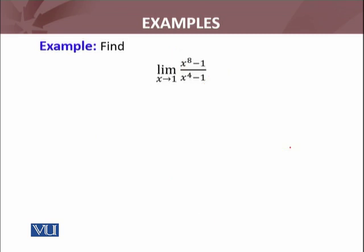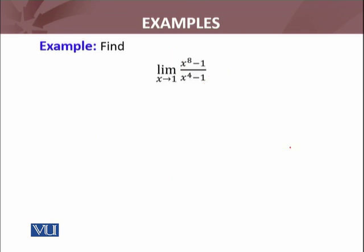Now find the limit as x approaches one. If I substitute one, the first trick for evaluation of limits in calculus is to put the point you're approaching. 1 minus 1, 1 minus 1, this becomes 0/0 form, which is once again illegal in mathematics. So we have to do something.